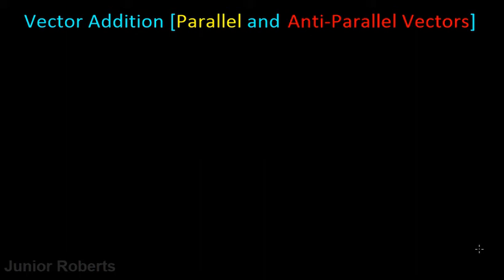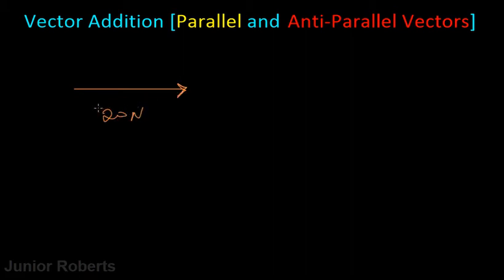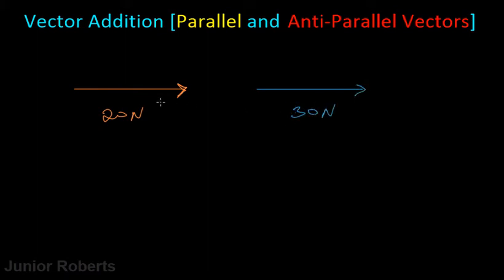Let's go right into it. Let's say we have a vector — for example a vector like this — and let's say this is a force vector of 20 newtons going in this direction. Then similarly we have another force vector and this one is 30 newtons. As we can recall about vector quantities, they have both a magnitude and a direction.